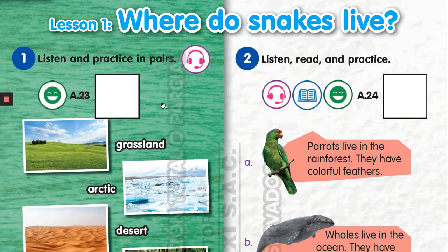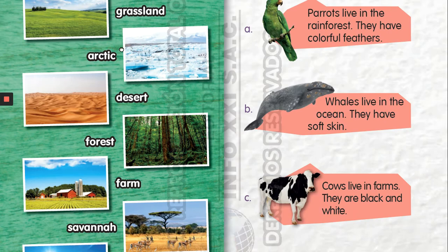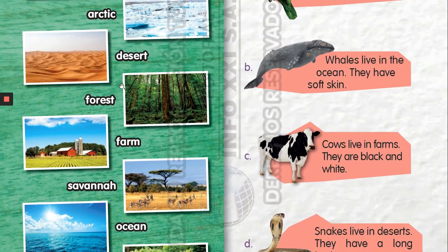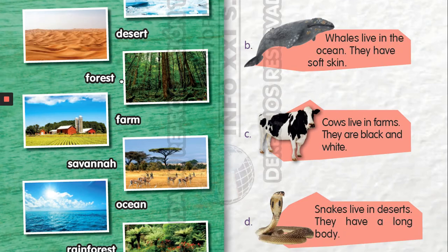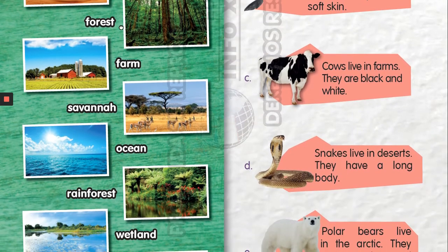Next point: Listen and practice. En parejas, escucha y practica. In this case you will listen to me and you will practice each word reading out loud. En este caso vas a escucharme y vas a pronunciar en voz alta cada uno de estos hábitats.